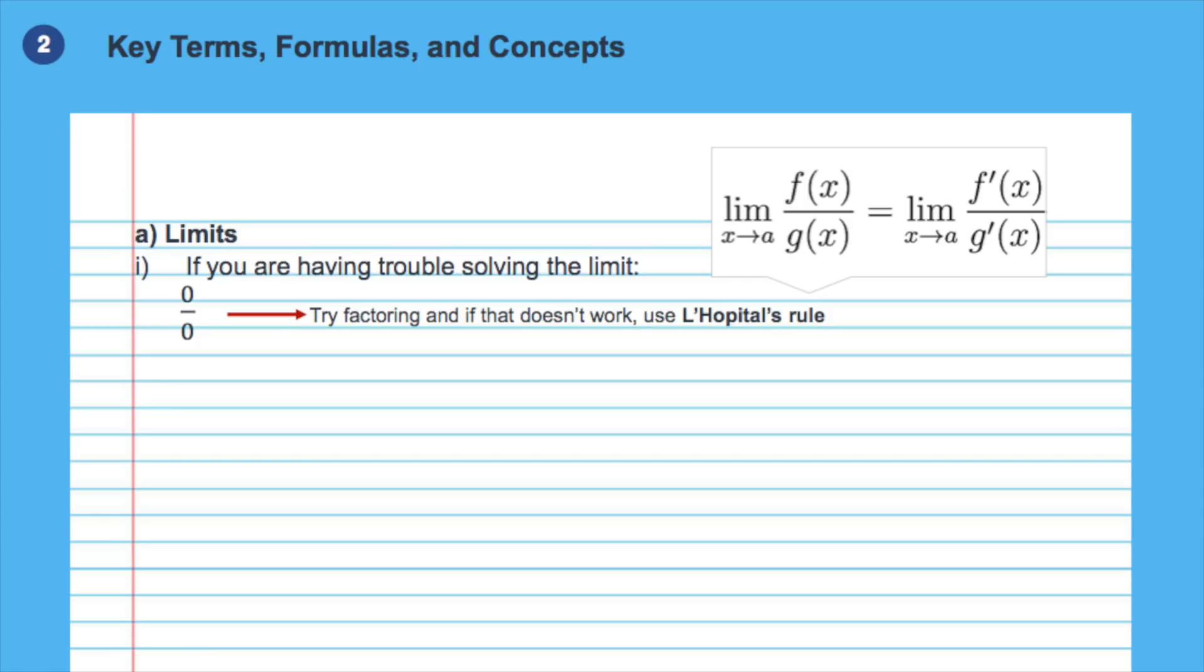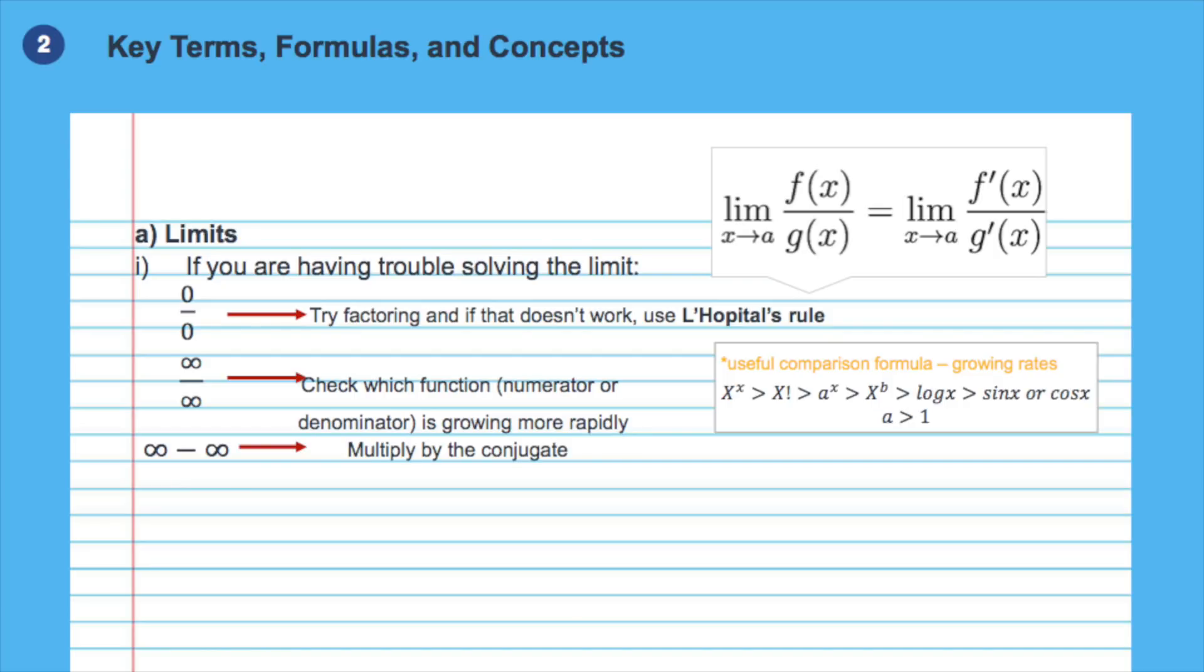If you end up with a ratio that is infinity over infinity, check which part of the ratio, the numerator or the denominator, is growing more rapidly. It is useful to remember this formula and it saves you time, but you know that you can also check by giving relatively large numbers to x and analyze the change. If you end up with a function in the format of infinity minus infinity, then multiplying the function given by its conjugate will give a solvable limit.